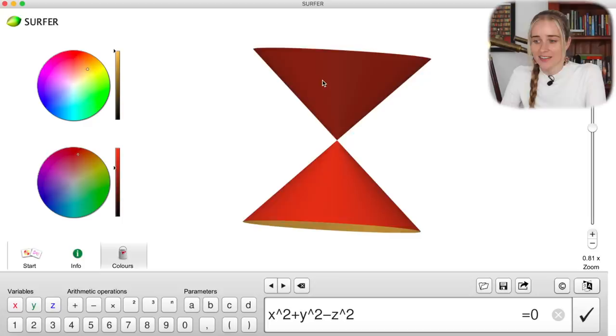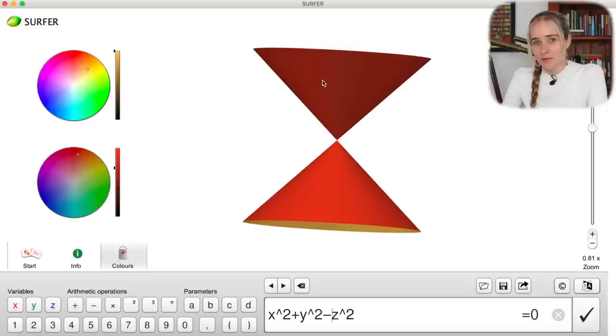But there is something else going on here. You can see that very spiky point in the middle. Well, this is what we refer to as a singularity.